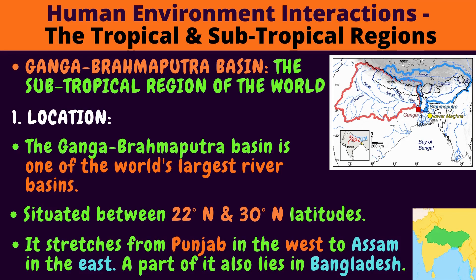Ganga Brahmaputra Basin — the subtropical region of the world. Location: Look at the map. Can you see the red outline and the blue outline on the map? On the first map.